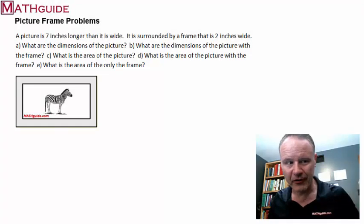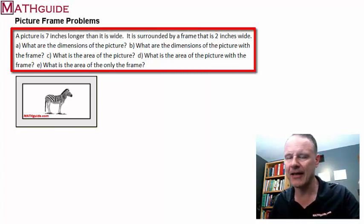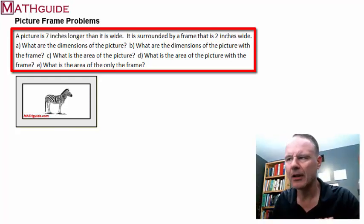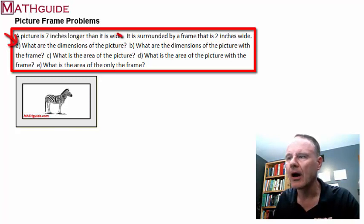Here's our picture frame problem. Our problem says that we have a picture that's seven inches longer than it is wide. It's surrounded by a frame that is two inches wide all the way around. So what do we have to find? We have to find a number of things here. What are the dimensions of the picture? What's the dimension of the picture with the frame? What's the area of the picture? What's the area of the picture with the frame? And of course, what is the area of only the frame?